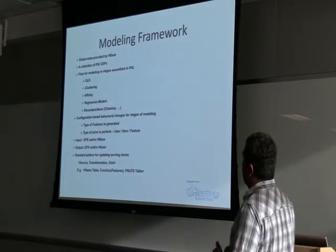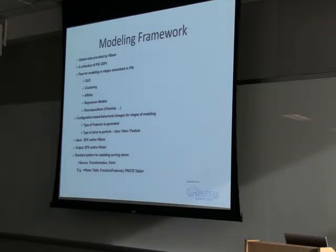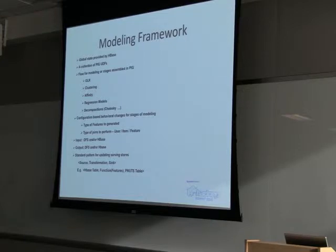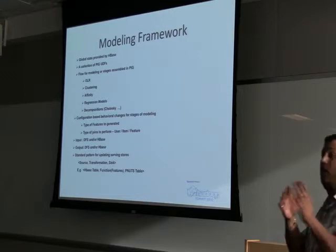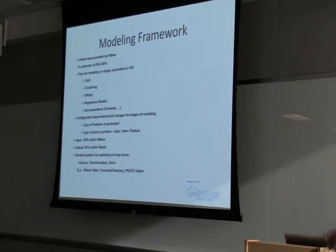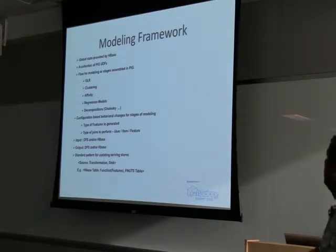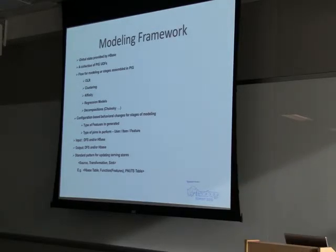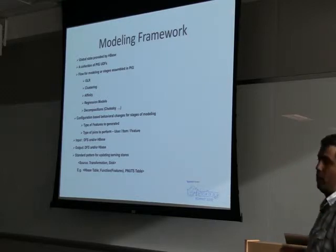Most of the modeling pipeline's behavioral changes are driven by configurations — what features need to be generated, whether to optimize based on gender, age and gender, or age, gender, and location. Those are configurable and controlled through configuration. It allows us to perform different types of joins, whether on users, items, or features, essentially allowing us to build most of the models we described before. The input can be from DFS or from HBase itself, and the output can be DFS or HBase.